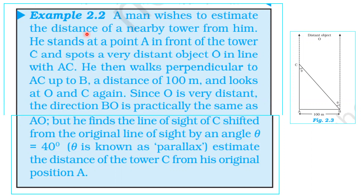A man wishes to estimate the distance of a nearby tower from him. He stands at point A in front of the tower C and spots a very distant object O in line with AC. He then walks perpendicular to AC up to B, a distance of 100 meters, and looks at O and C again. Since O is very distant, the direction BO is the same as AO. But he finds the line of sight of C shifted from the original line of sight by an angle theta equal to 40 degrees.